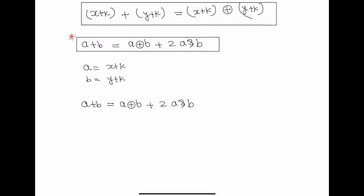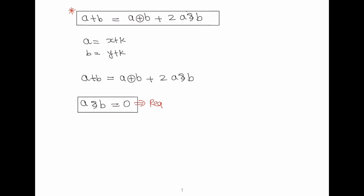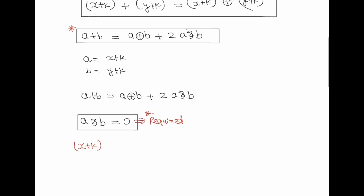We have to find a value of k such that the left-hand side equals the right-hand side. This means a AND b should be zero, which means we have to find a k such that x plus k AND y plus k equals zero.